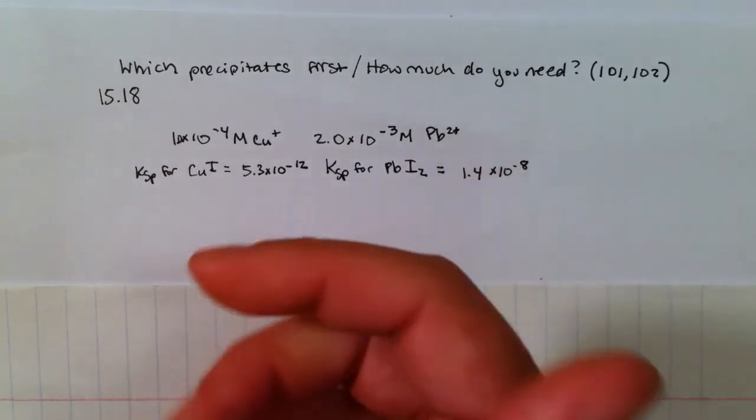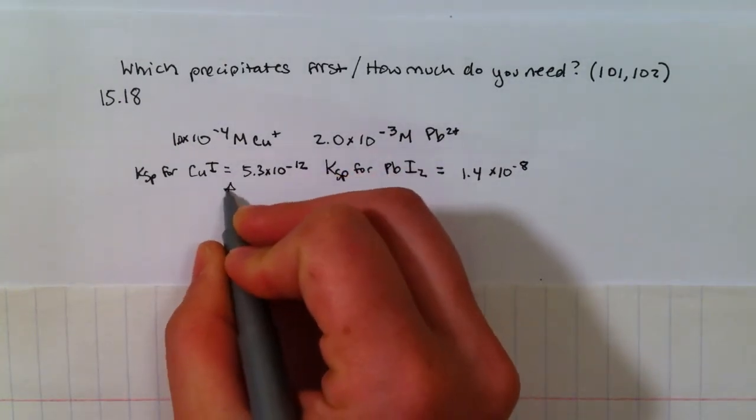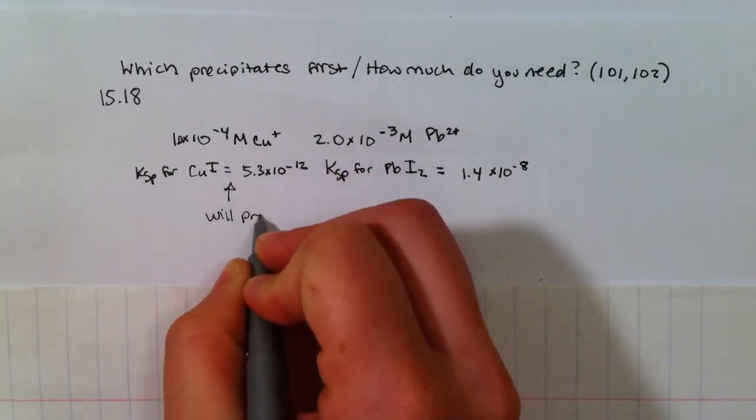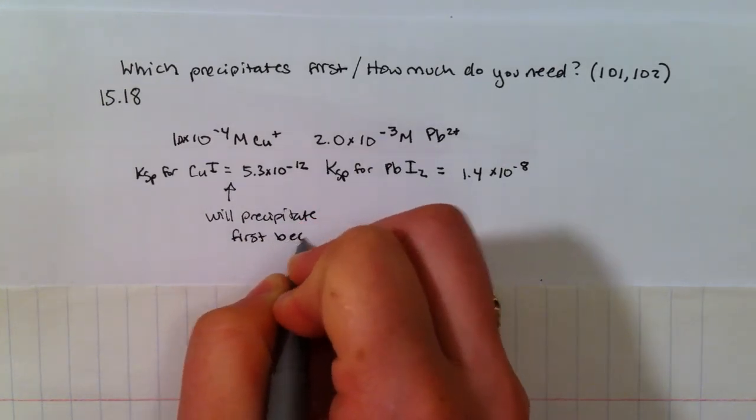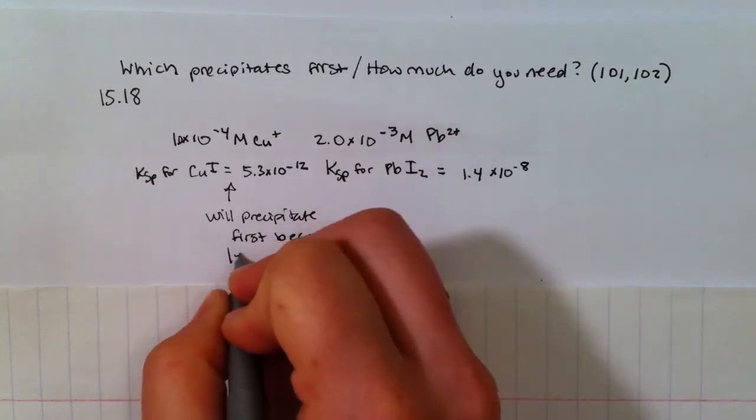So the one that will precipitate first is here, because less can dissolve.